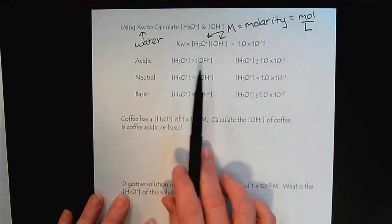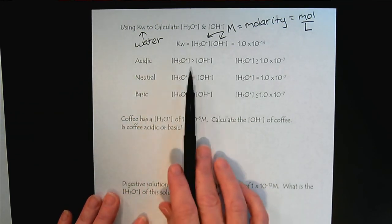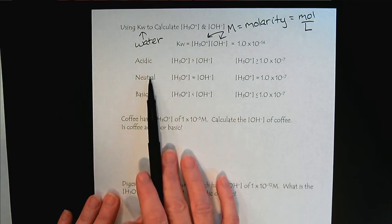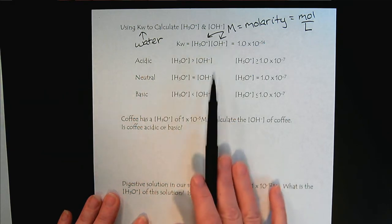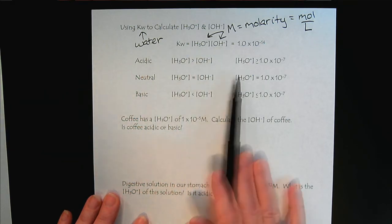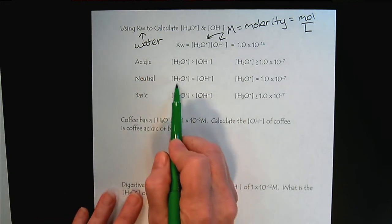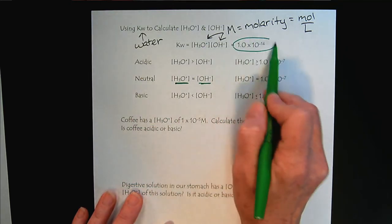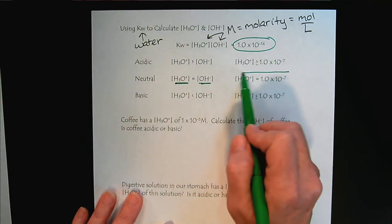So here we are, here's the information from before. But now if we take our basic definition of acidic, neutral, and basic, and let's connect it to the KW expression. So, and I think sometimes it's easier to start at neutral. So, if the hydronium and the hydroxide concentrations are neutral, and they have to multiply together to make 10 to the minus 14, then what do we know? The hydronium ion concentration is going to be 10 to the minus 7.